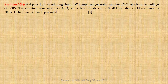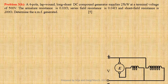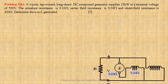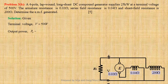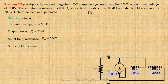Problem number 3B: A 4-pole lap-wound long-shunt DC compound generator supplies 25 kilowatt power at a terminal voltage of 500 volts. Armature resistance is 0.03 Ohm, series field resistance is 0.04 Ohm, and shunt field resistance is 200 Ohm. We need to find the generated EMF. Given: terminal voltage V equals 500 volts, output power PO equals 25 kilowatt, RSH equals 200 Ohm, RSE equals 0.04 Ohm, RA equals 0.03 Ohm.